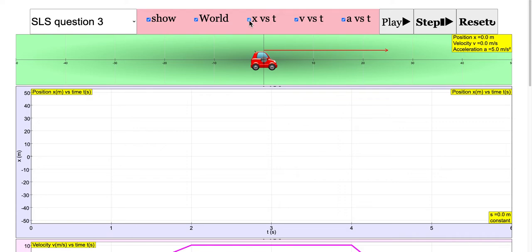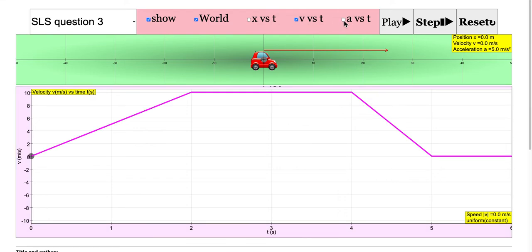First thing you need to do is uncheck the position versus time and acceleration versus time, so that you can only see this particular answer. The trick is you need to look at this and then find out the distance traveled.